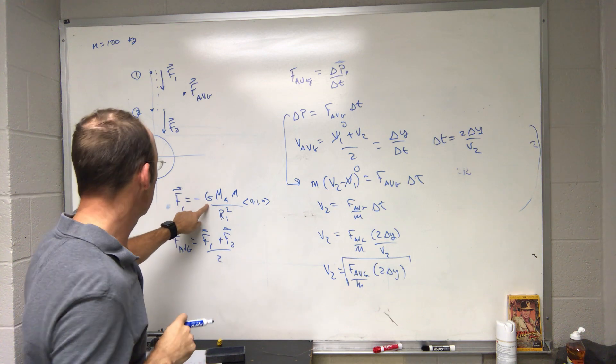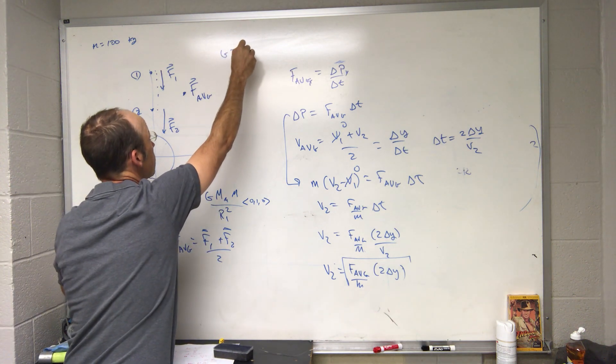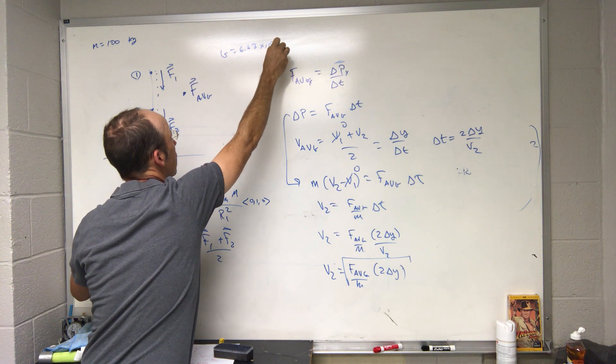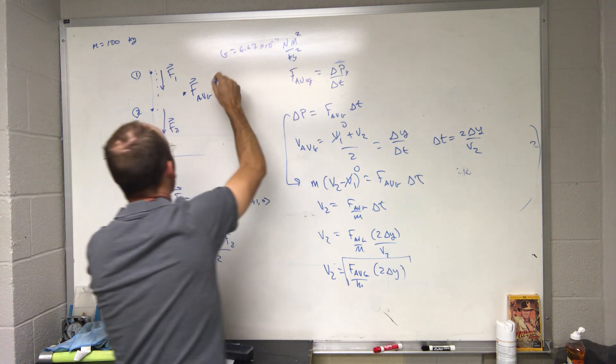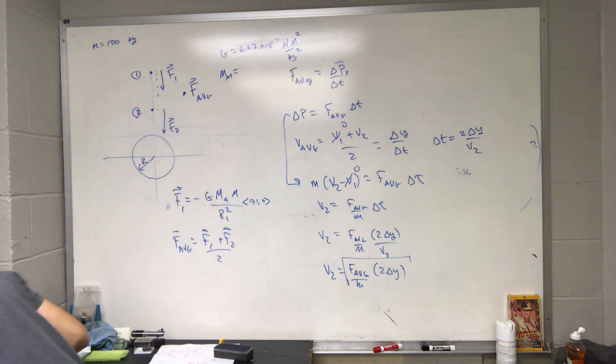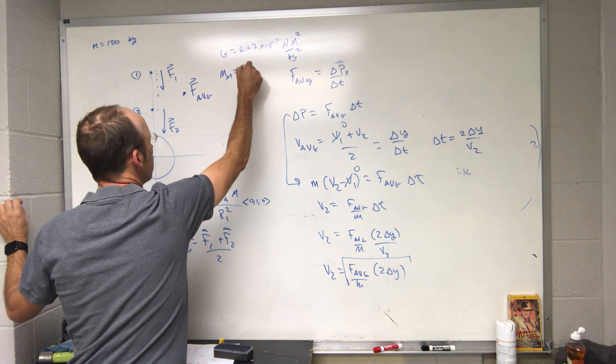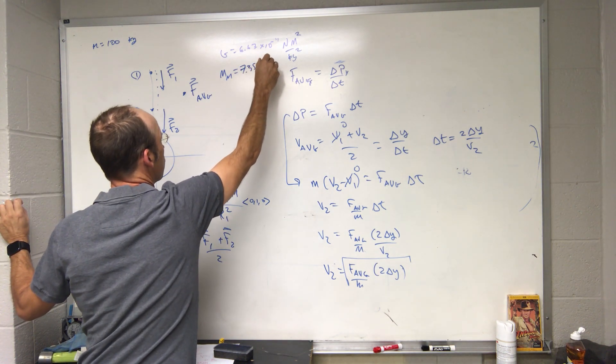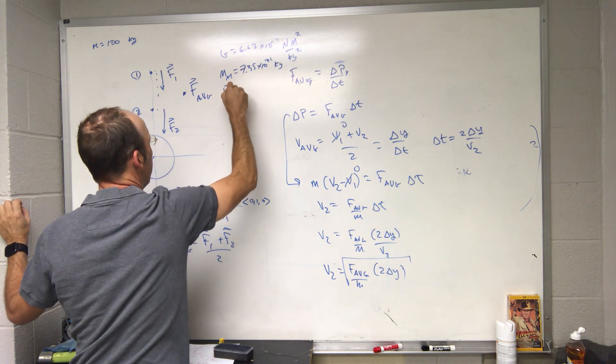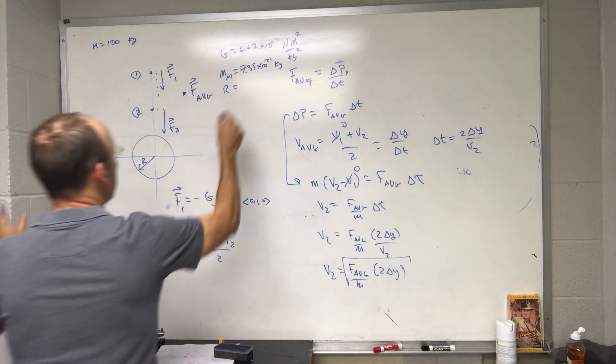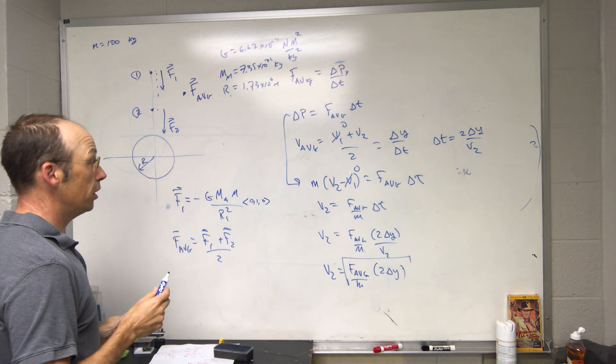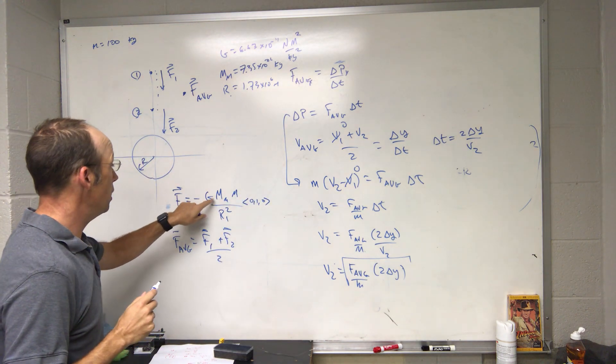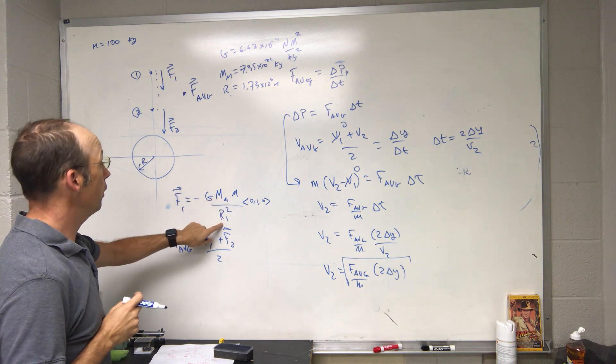So let's get that value for v2. I have to calculate F average. So I need to know G is 6.67 times 10 to the negative 11 newtons meters squared per kilogram squared. The mass of the moon, 7.35 times 10 to the 22 kilograms. The radius of the moon, 1.73 times 10 to the 6 meters.